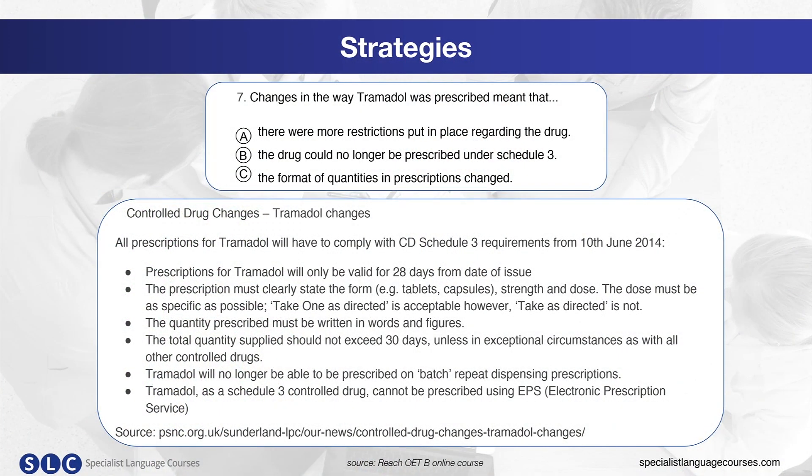Here we have an example of a part B question. You can see the title at the top of the text: controlled drug changes, tramadol changes, which outlines the type of information you will find in the text. Now read the question which states: changes in the way tramadol was prescribed meant that. So we know we have to look for the result of the changes that have been implemented.